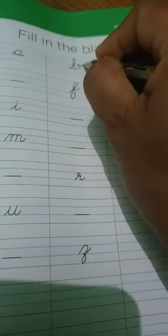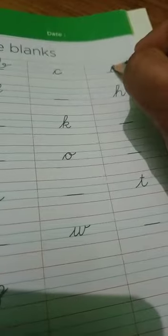So here it comes, A. After A, what comes? It comes B, so you have to write here B. Again in the blank, you have to fill writing D.